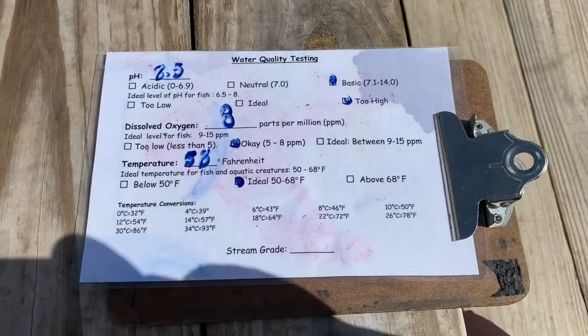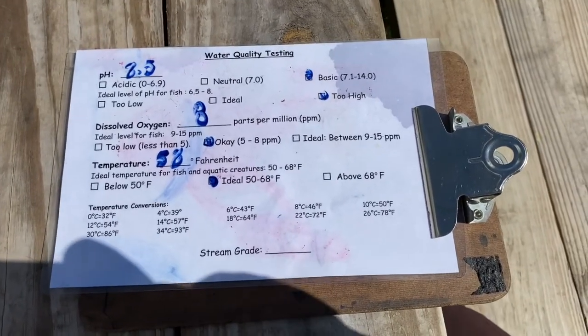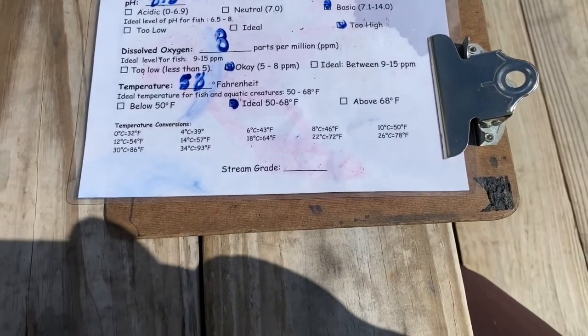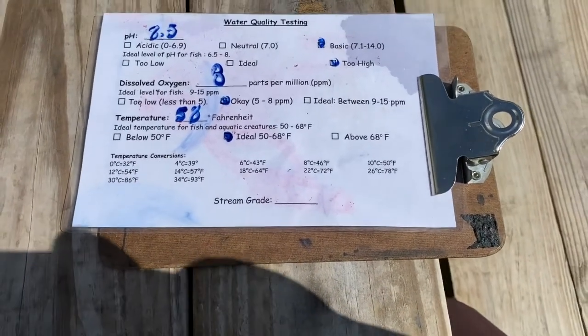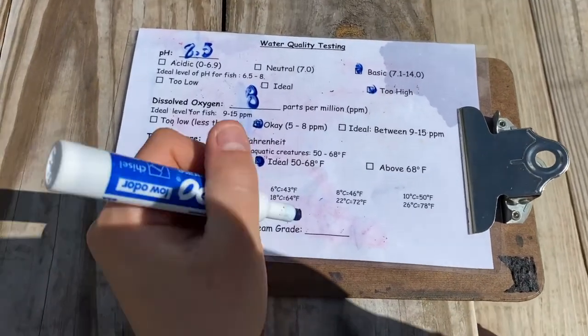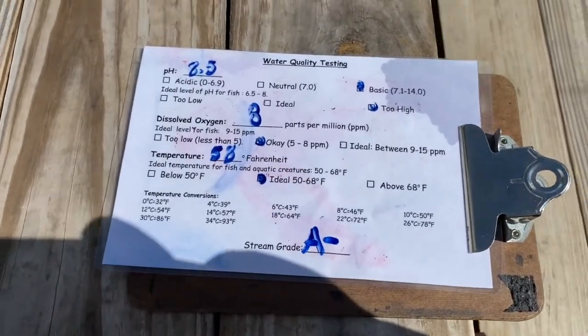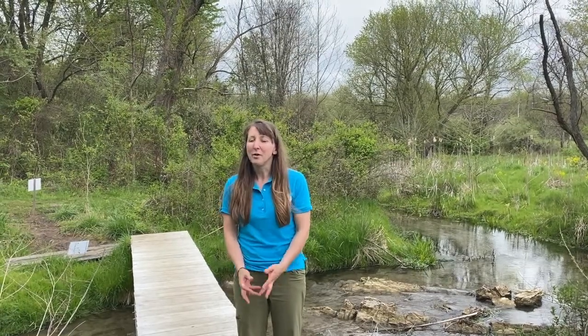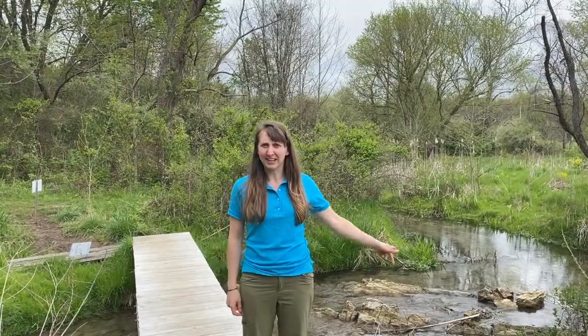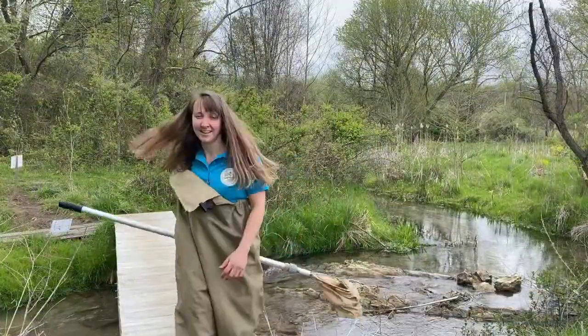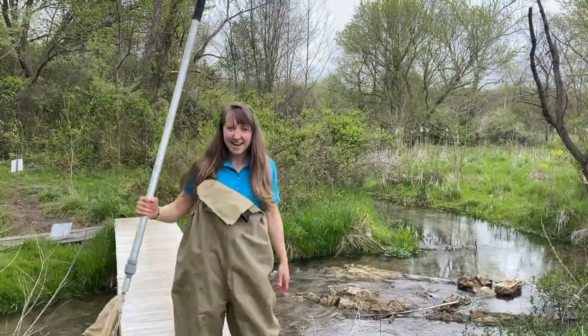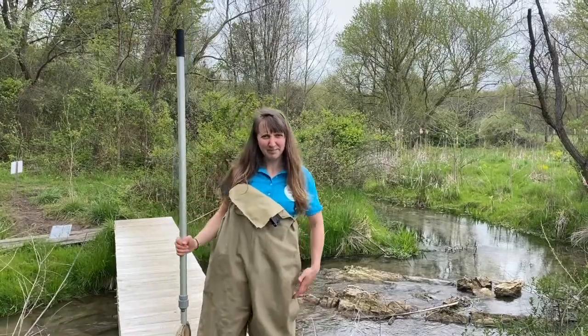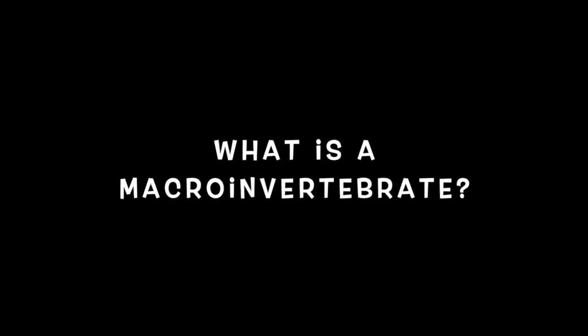So what kind of grade will I give this stream? Its pH was a little bit high, dissolved oxygen was right in the middle, and the temperature was ideal — I'd give our stream probably an A-minus. For the next part of your virtual field trip, we're going to explore what lives in Bullskin Run. Now that I'm suited up, let's review: what is a macroinvertebrate?